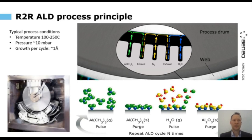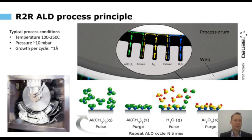As a next step, we bring in the water vapor, and that will react very aggressively on the surface as long as the reactive sites are available, and will automatically stop. Now we have generated one layer of aluminum oxide. The thickness of this layer is about one angstrom, so 0.1 nanometers. To get one nanometer, we repeat this 10 times, and so forth — this can be just repeated over and over again. After the water pulse, there is also another purge, so both chemicals are separated by inert gas.